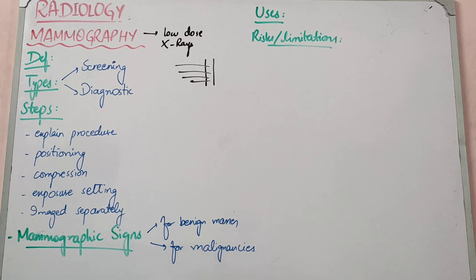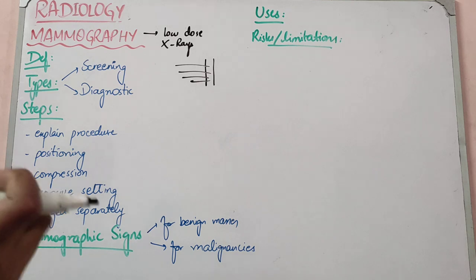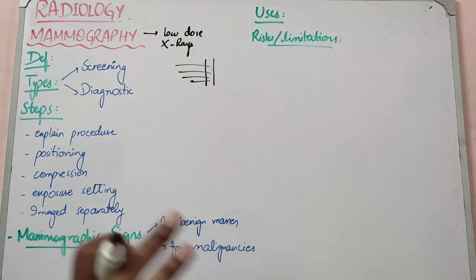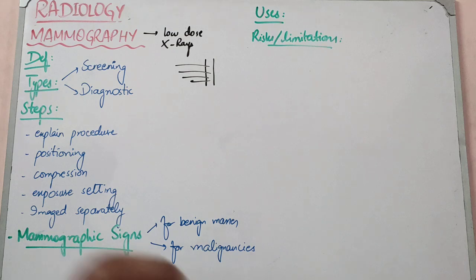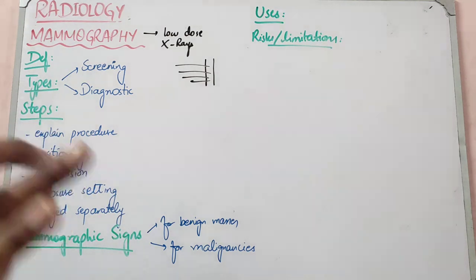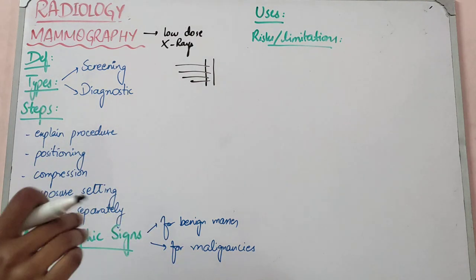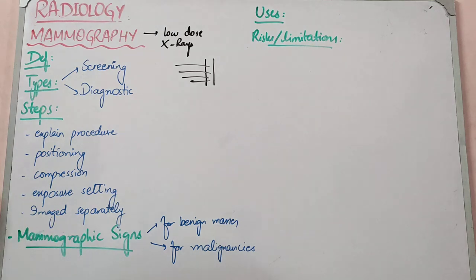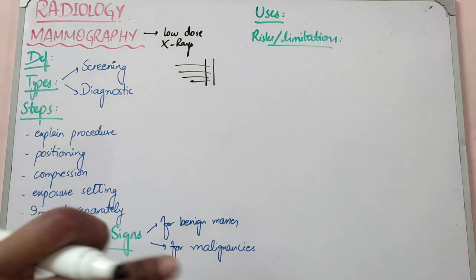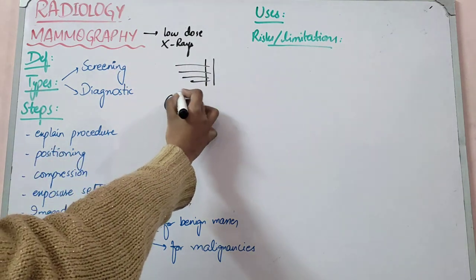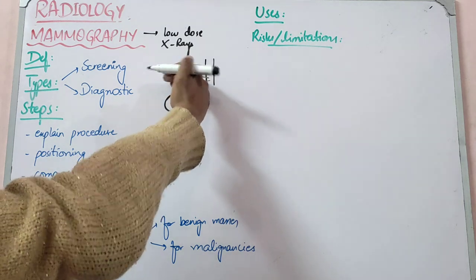Because the breast tissue is fat, we need to see the fatty structure. The parenchyma of the breast is made of stroma, and we need to see the glandular elements and the channels. So if we take X-rays from a distance like a chest X-ray, we cannot delineate the breast tissue because it is fatty tissue. We need to bring the X-ray beam close to the breast tissue.